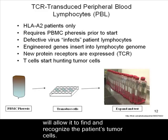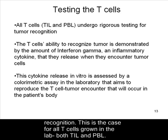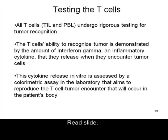Once the cells have expanded sufficiently in vitro, they must be tested for tumor recognition. This is the case for all T cells grown in the lab, both TIL and PBL. All T cells undergo rigorous testing for tumor recognition. The T cell's ability to recognize tumor is demonstrated by the amount of interferon gamma, an inflammatory cytokine, that they release when they encounter tumor cells. This cytokine release in vitro is assessed by a colorimetric assay in the laboratory that aims to reproduce the T cell tumor encounter that will occur in the patient's body.